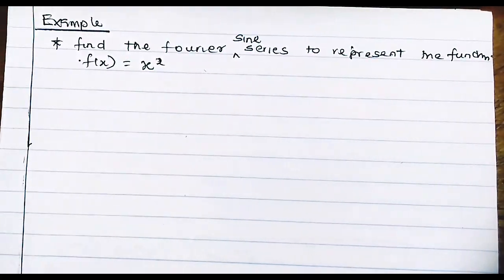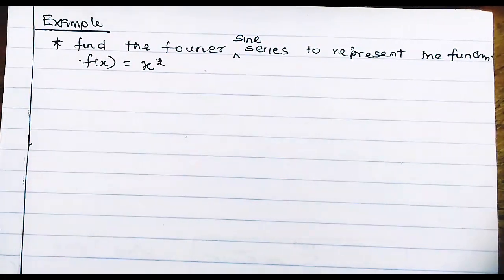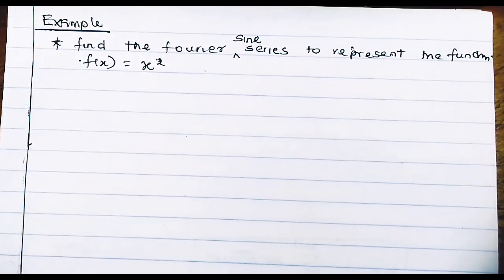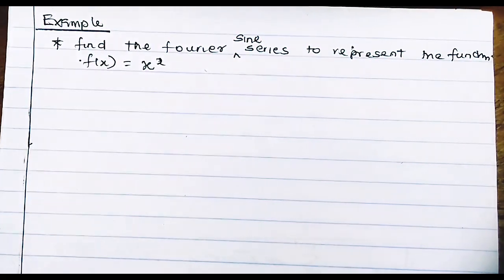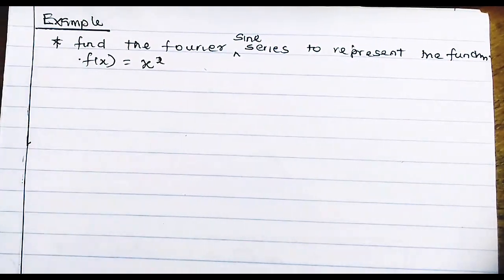Welcome back to another lesson on Fourier series. Complementing my last video on even and odd functions, we are going to take this example. The question says: find the Fourier sine series to represent the function x squared.